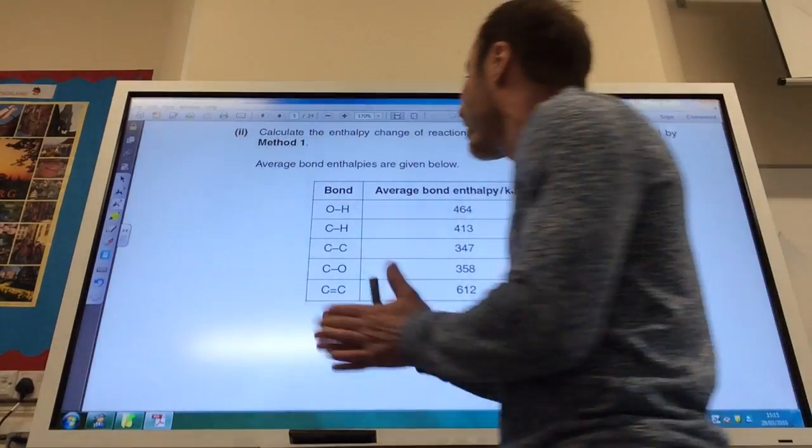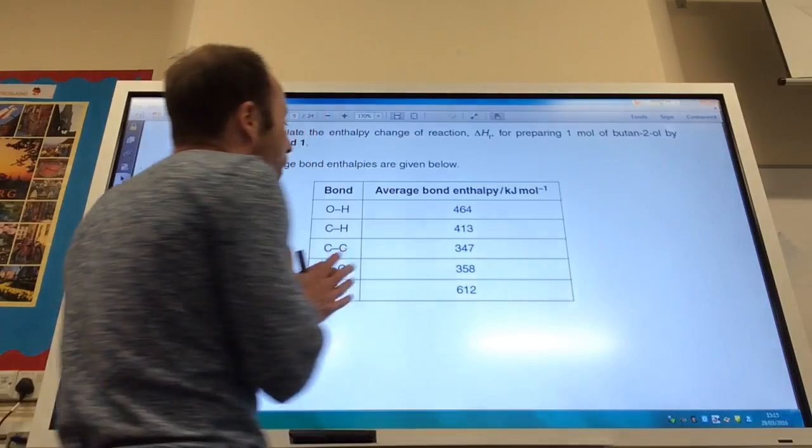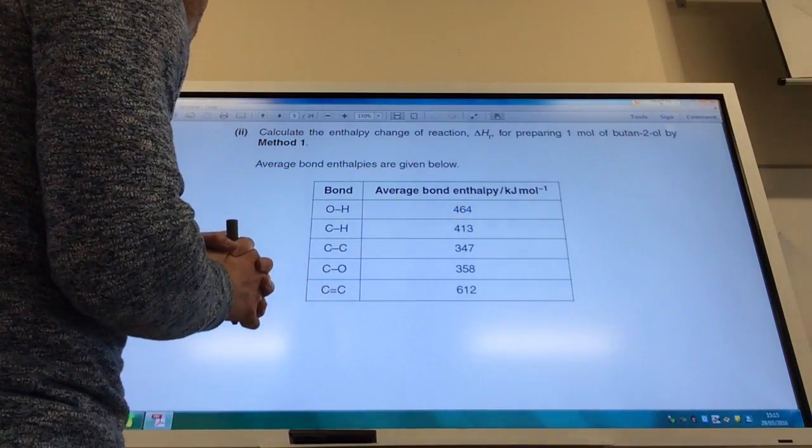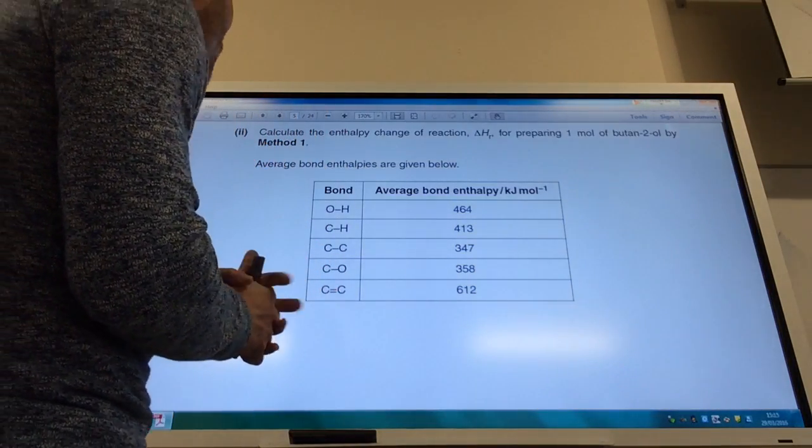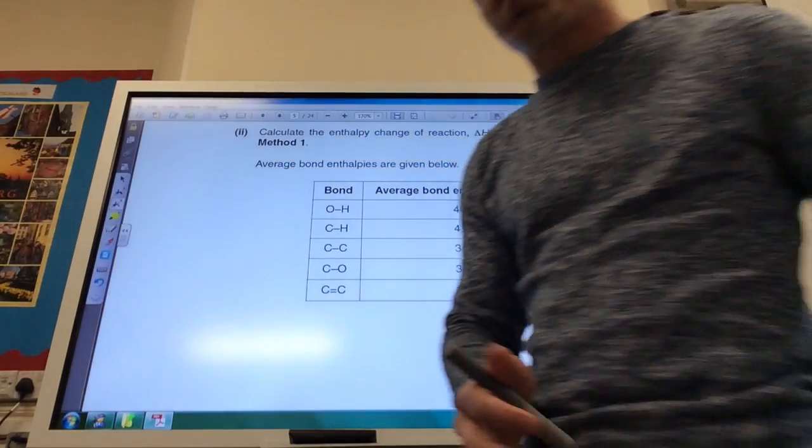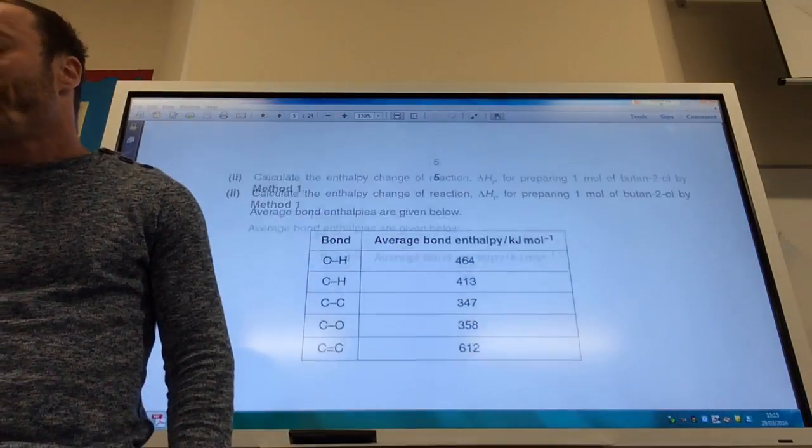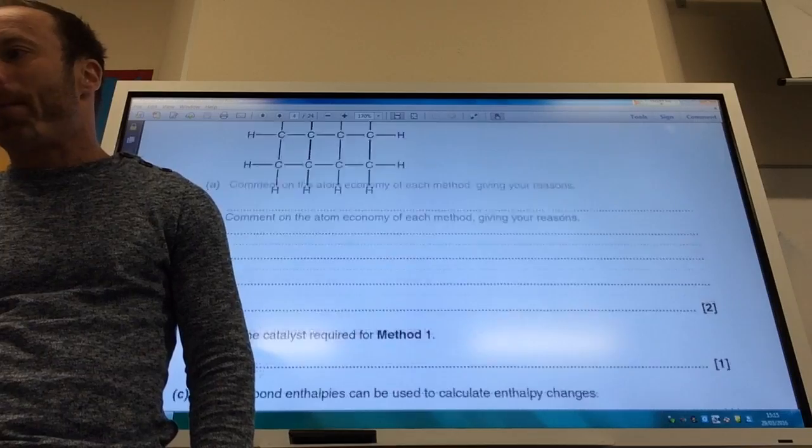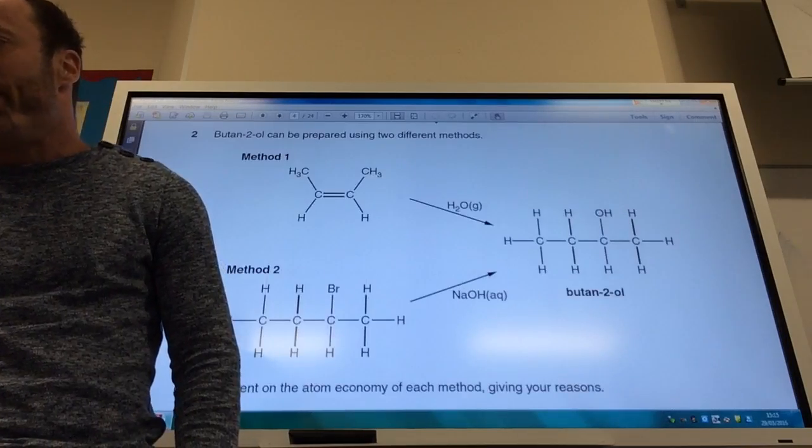Okay, so next one. How can the enthalpy change for the reaction for preparing one mole of butan-2-ol by method one? So you've got to count up your bonds broken and your bonds made. So let's whizz back to that and have a look at method one.